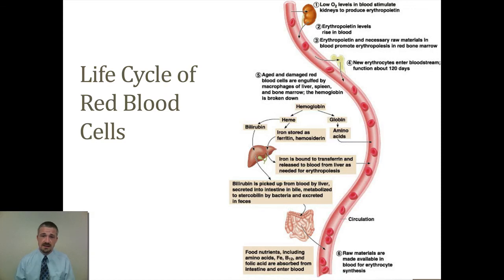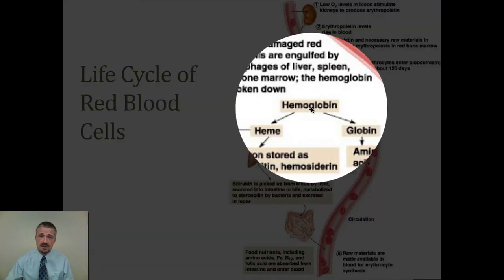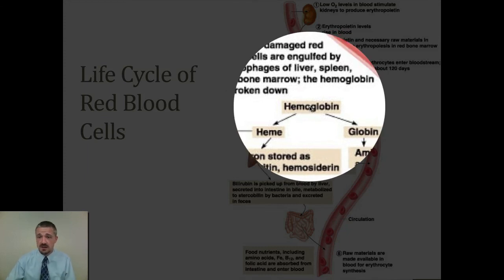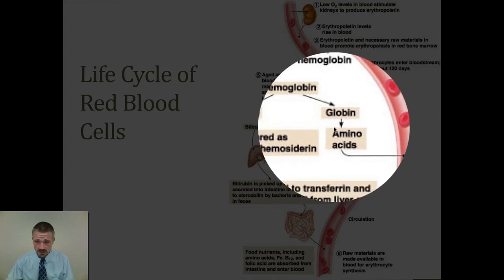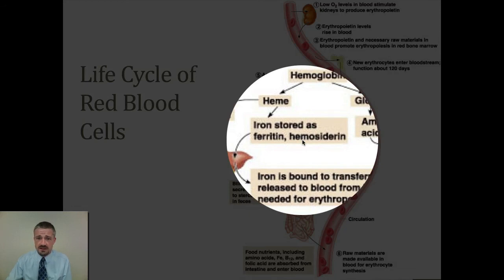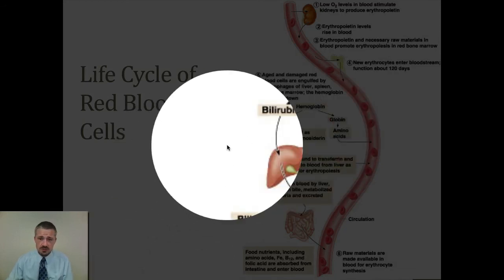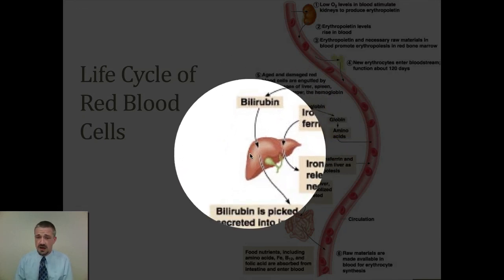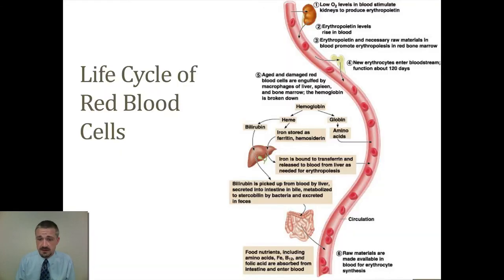What happens then is the hemoglobin and certain parts of the cell are going to be broken down, recycled, and gotten rid of. The globin portion gets broken down and we use it for different amino acids. The iron from the heme group is going to be recycled. Certain parts of that heme group, though, are going to become bilirubin, which is going to be lost to the liver as pretty much the bile - it's the main coloring component of the bile. So that's really the life cycle of a red blood cell.